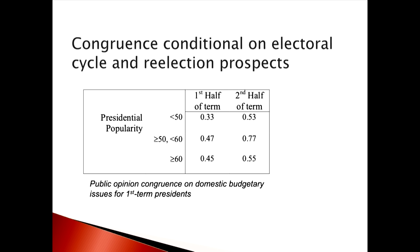So they're often pushing things through early that they know they can't do later in the term when they're running. People who are running for reelection soon are going to be catering to public opinion, particularly if they have a good chance to win. The system was designed this way — that's why the House has members up for reelection every two years.